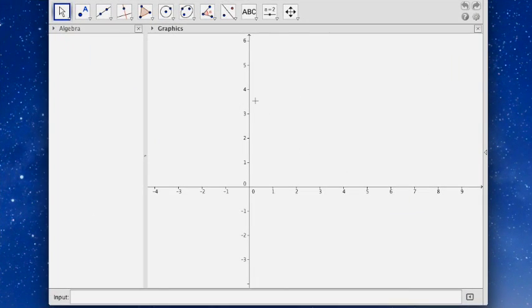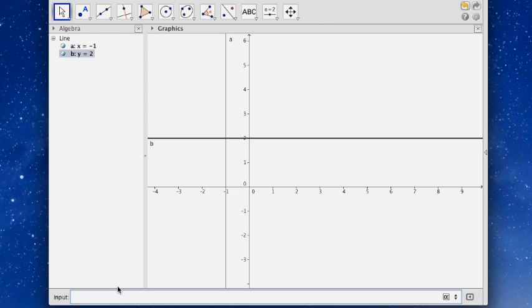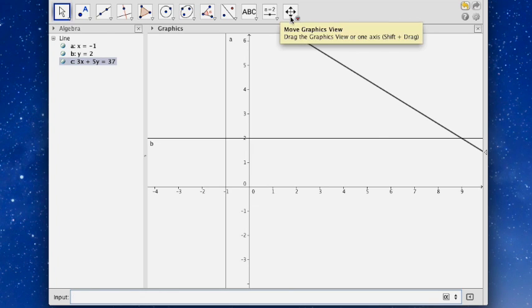So, I'm back on the GeoGebra website and I wanted to show you something. If you open up this little box down at the bottom, you can put your equations down here. So, I can put in my x equals negative 1. Hit enter. And you see that it shows up right here, the line that x equals negative 1. I can also type in y equals 2. And I can put them in standard form also. 3x plus 5y equals 37.